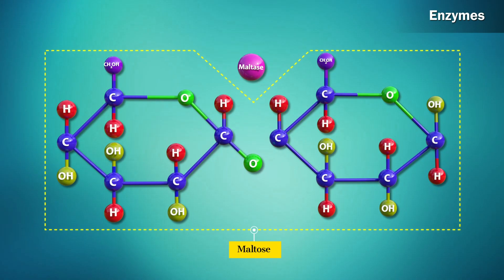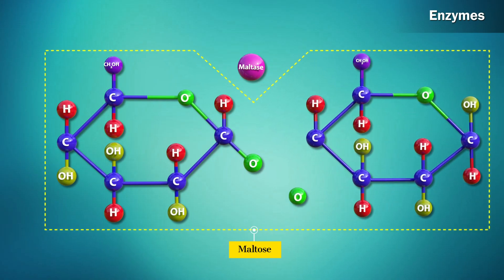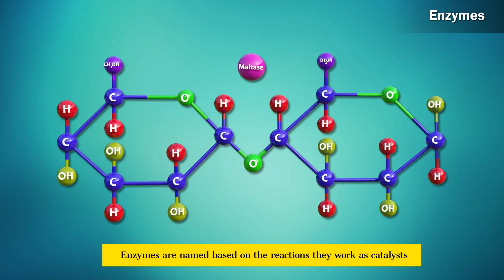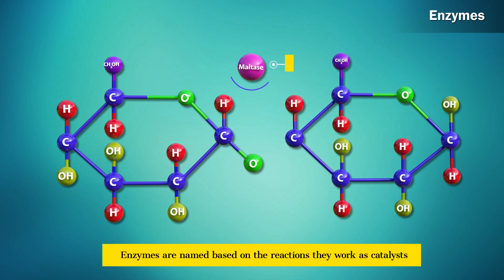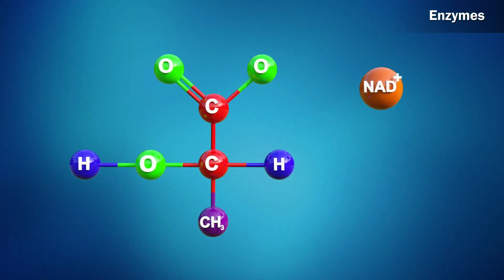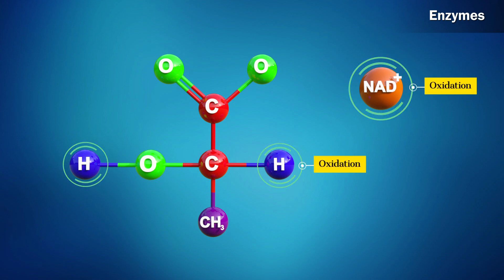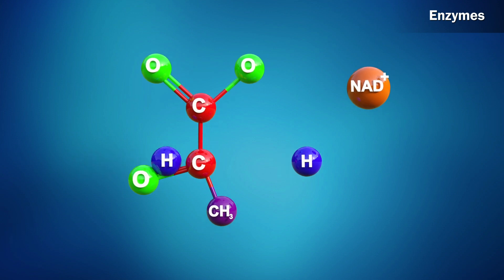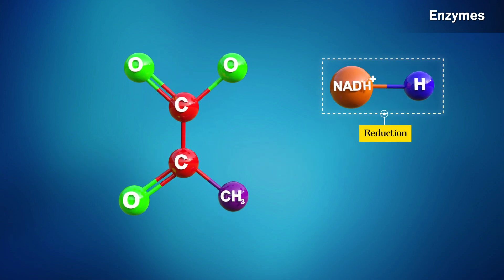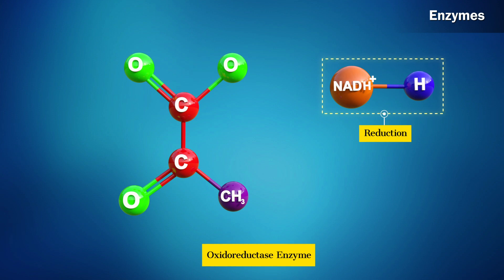For example, maltase is the enzyme that acts as a catalyst in the hydrolysis of maltose. Enzymes are named based on the reactions they work as catalysts for. For example, an enzyme can be a catalyst for an oxidation process and also be responsible for reduction in the reaction. Such enzymes are called oxidoreductase enzymes.